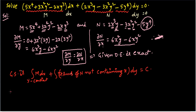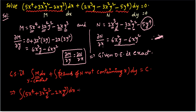Write all terms of M: ∫(5x⁴ + 3x²y² - 2xy³) dx, integrating with respect to x with y as constant. For the terms of N, the first term 2x³y contains x, the second term -3x²y² also contains x, but the last term -5y⁴ does not contain x. So we take -5y⁴ into dy, making sure not to forget the negative sign. The expression equals c.